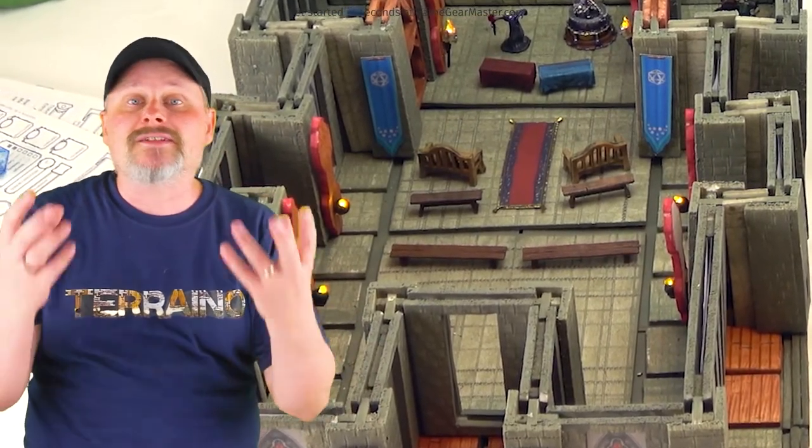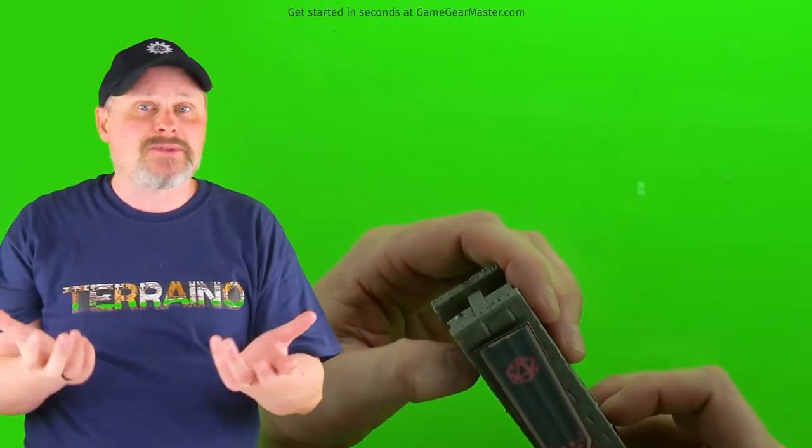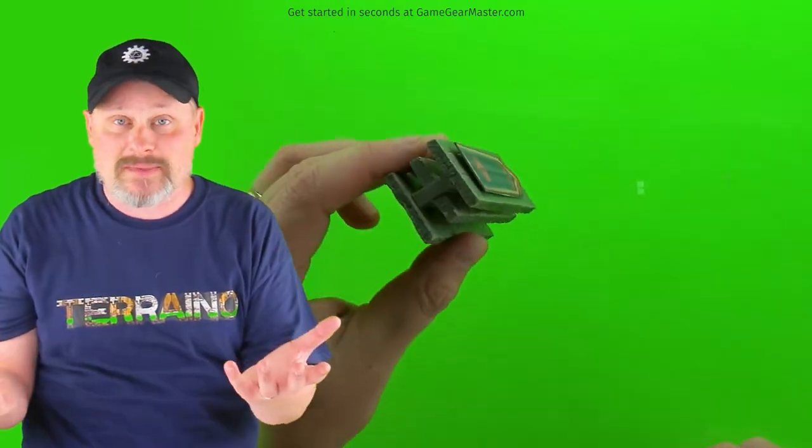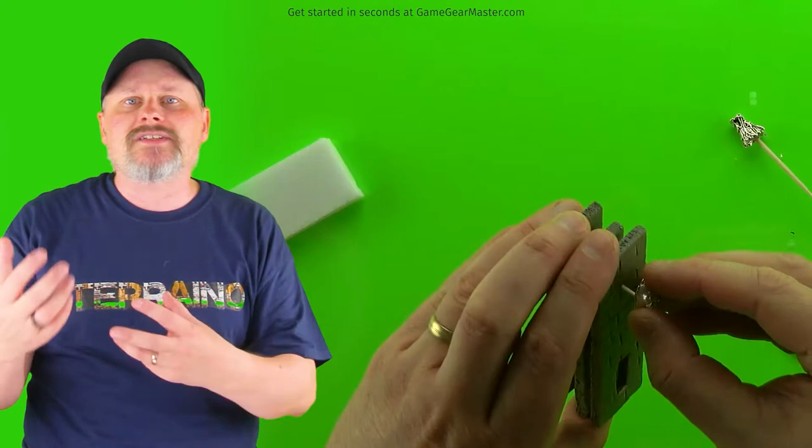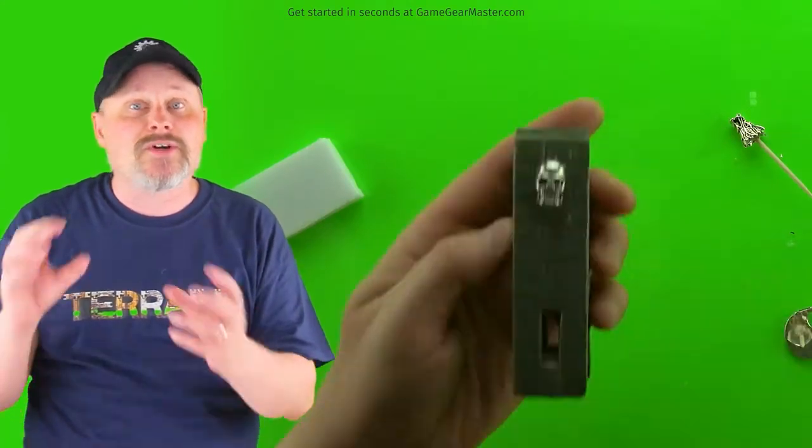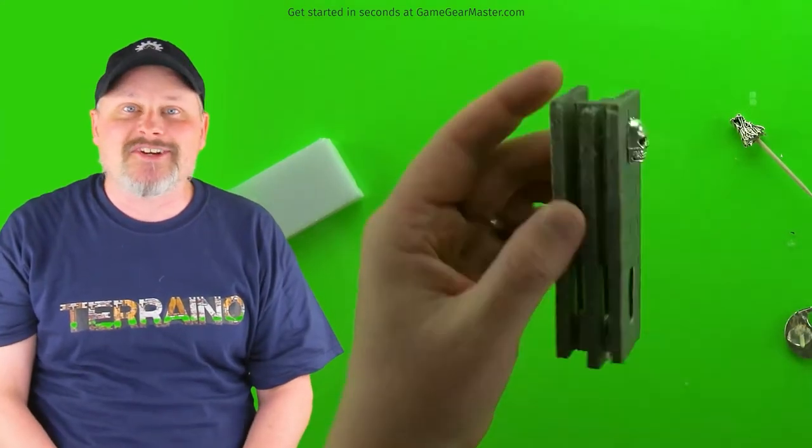We're going to start making some hanging flags. They are printable textures in the tech and torches manual. And then we're going to talk about some other items you can grab on the Game Gear Master online store to also make decorators. So let's get started.